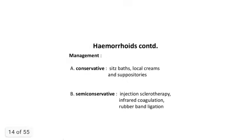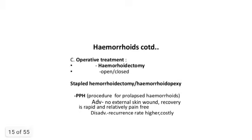Management is conservative for first and second degree hemorrhoids: sitz bath, local creams, and suppositories. Semi-conservative options include injection sclerotherapy, infrared coagulation, and rubber band ligation, which reduces the size of hemorrhoids. Definitive treatment is hemorrhoidectomy, which can be open or closed; open is the Milligan-Morgan method.